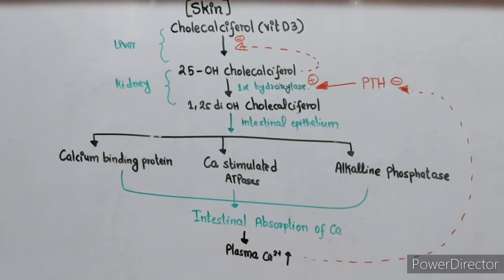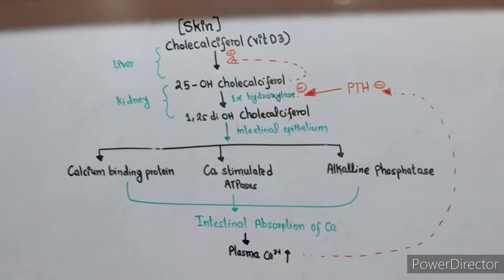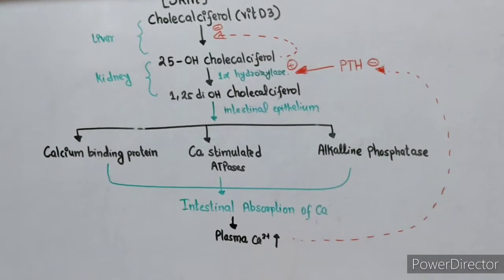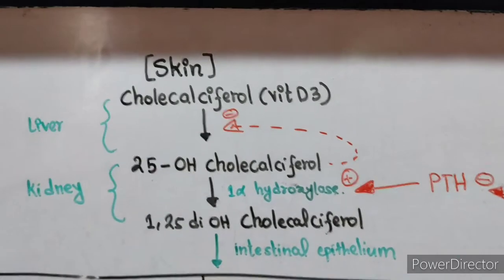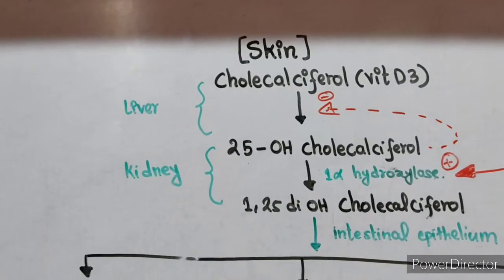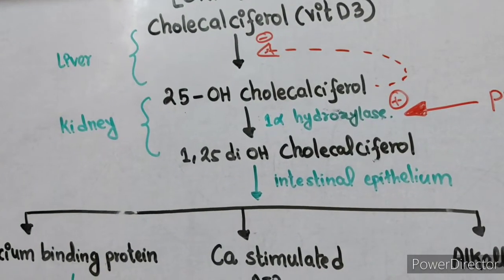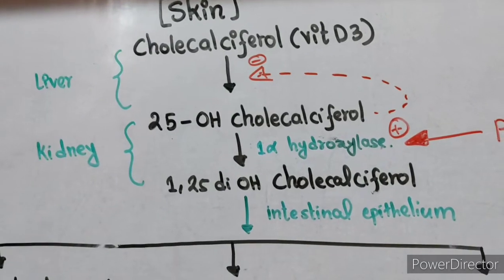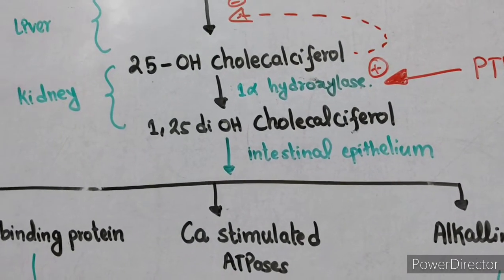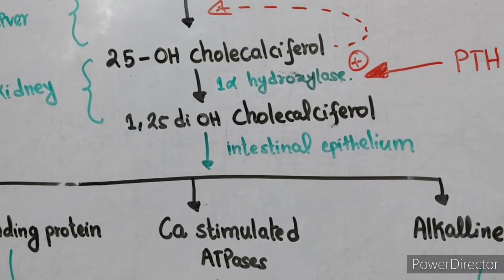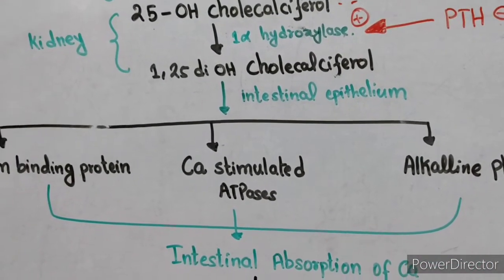Parathyroid hormone does not act directly on the intestines; it acts indirectly through vitamin D3. In the skin, cholecalciferol (vitamin D3) is formed from 7-dehydrocholesterol by ultraviolet rays of the sun. Cholecalciferol is then converted into 25-hydroxycholecalciferol by the enzyme 25-hydroxylase in the liver. In the kidney, 25-hydroxycholecalciferol is further hydroxylated into 1,25-dihydroxycholecalciferol, also known as calcitriol, the most active compound of vitamin D3.